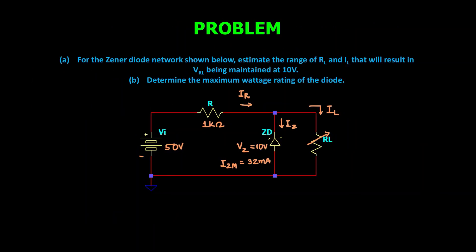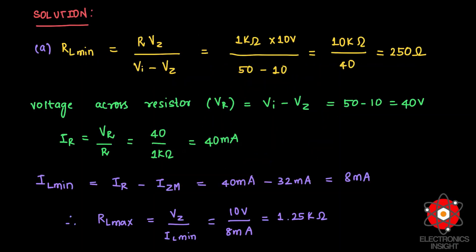Now let us solve a problem related to fixed VI and variable RL. Given the Zener diode network shown, we need to estimate the range of RL and IL that will maintain a constant VRL of 10 volts, and in the second part determine the maximum power rating of the Zener diode. Using the formula RL_min equals R multiplied by VZ divided by (VI minus VZ), and substituting the given circuit values, we get a minimum load resistance of 250 ohms.